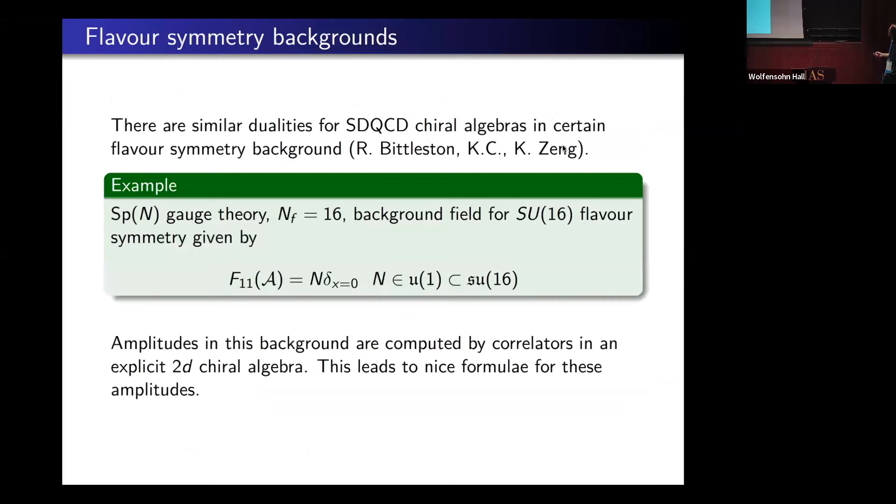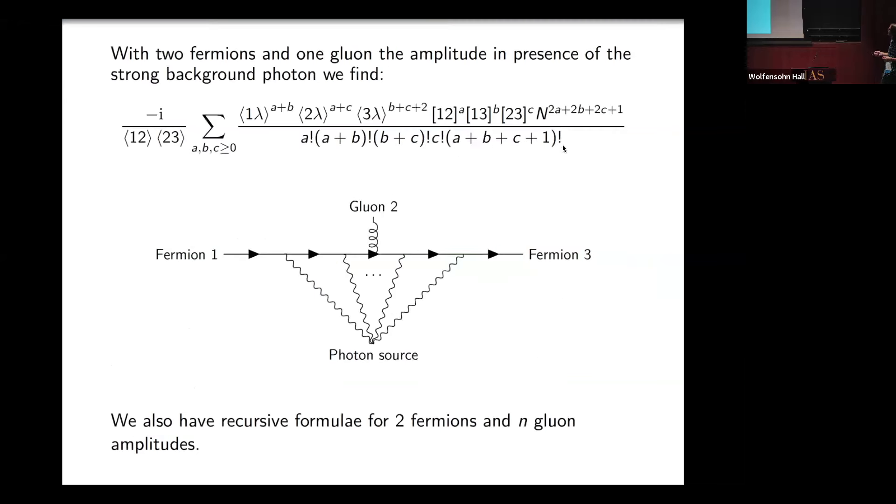Maybe I want to quickly advertise some other fun computations. There's some similar computations for scattering amplitudes in flavor symmetry backgrounds that we were able to do using these methods, and we get some nice formulas. For example, we found this nice kind of hypergeometric series formula for the following expression. I have just an operator located at a point in spacetime which sources a self-dual photon.